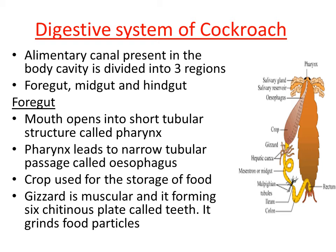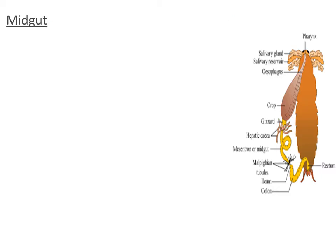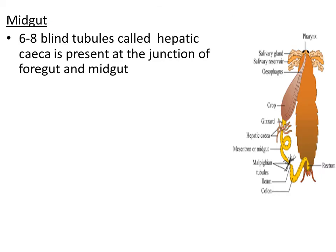At the junction where the foregut joins with the midgut, we can see finger-like projections. These are not thread-like structures but are larger — they are called hepatic caeca. There are six to eight blind tubules located at the junction of foregut and midgut, and these finger-like projections are called hepatic caeca.